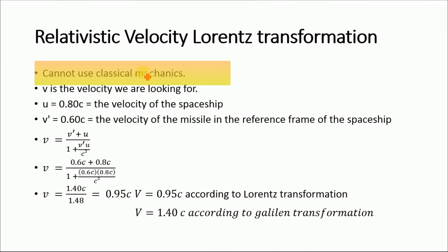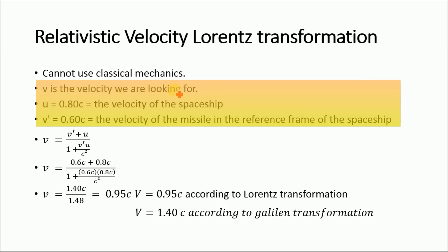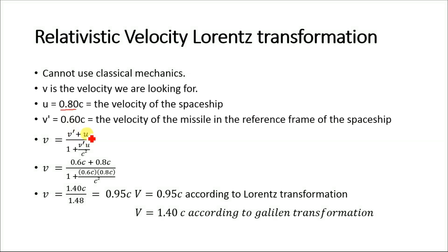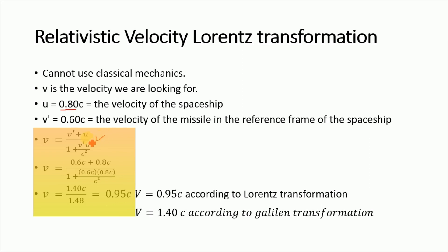From our previous discussion it is clear that we cannot use classical mechanics to solve this kind of problem. In our equation, v is the velocity we are looking for, u is the velocity of the spaceship which is 0.80c, and v′ is the velocity of the missile relative to the spaceship which is 0.60c. Substituting into the Lorentz transformation equation: v = (v′ + u) / (1 + v′u/c²).